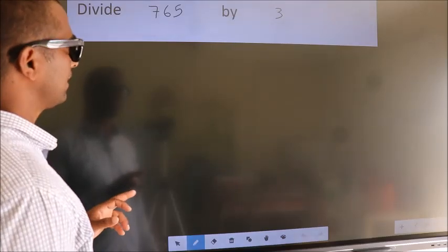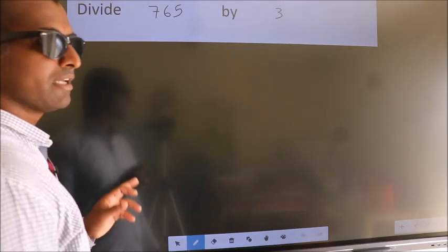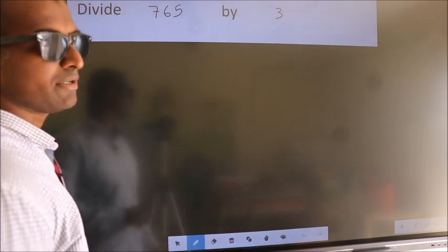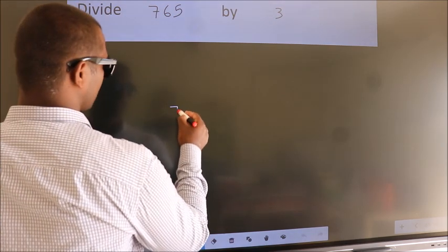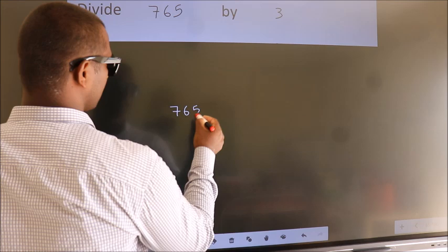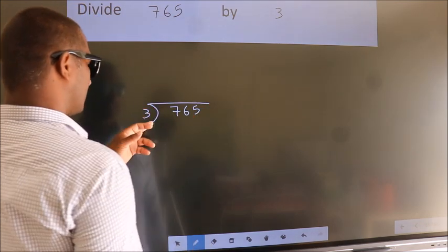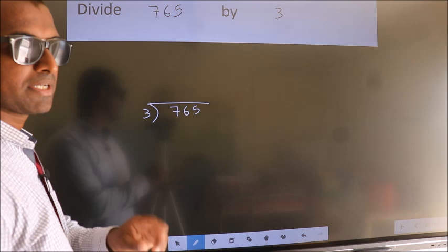Divide 765 by 3. To do this division, we should frame it in this way: 765 here, 3 here. This is your step 1.